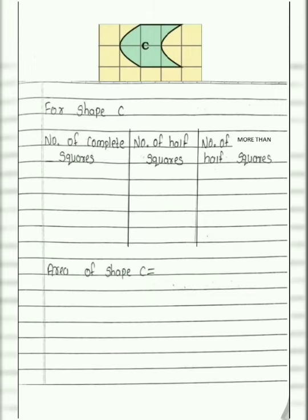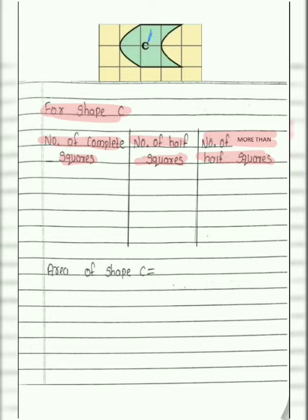Pay attention here. Shape C is given. We will start our solution with statements for shape C. We will draw 3 columns: number of complete squares, number of half squares, and number of more than half squares. Now we will count. There are 1 and 2 complete squares — that is 2. We will write 2 here.